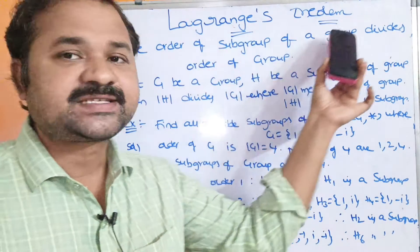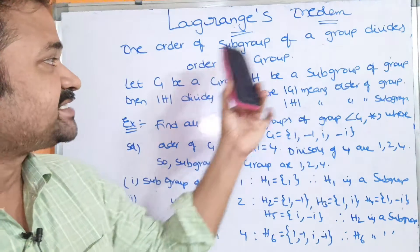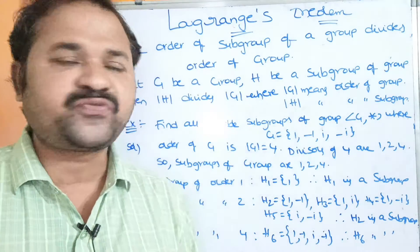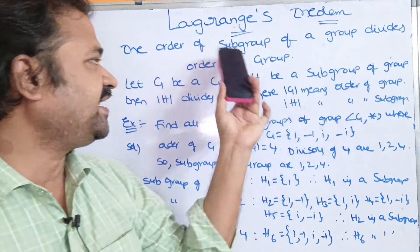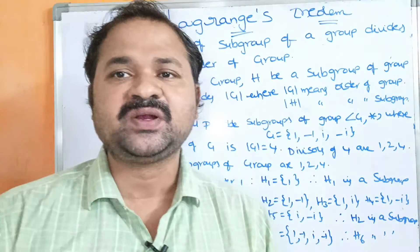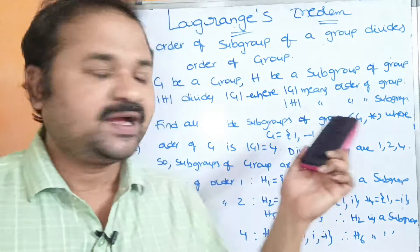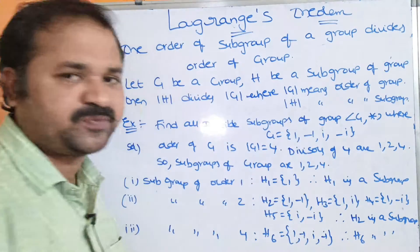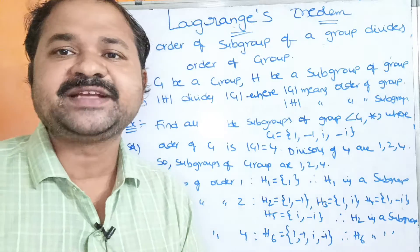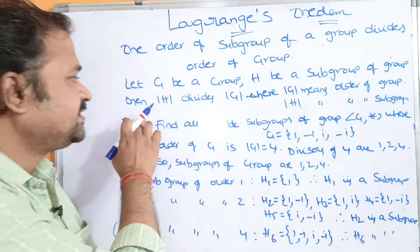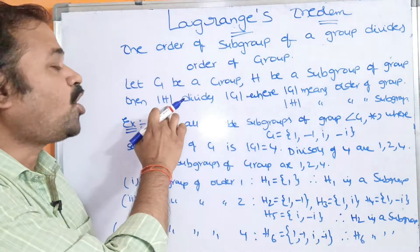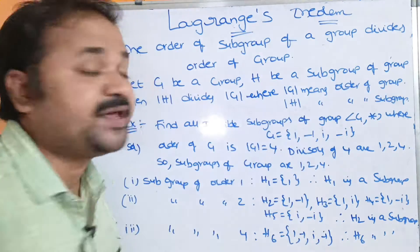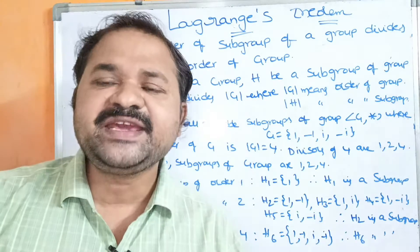Lagrange's algorithm states that the order of a subgroup of a group divides the order of the group. Let G be a group and H be a subgroup of G. Then mod H divides mod G, where mod H means the order of the subgroup and mod G means the order of the group — that is, how many elements are there.